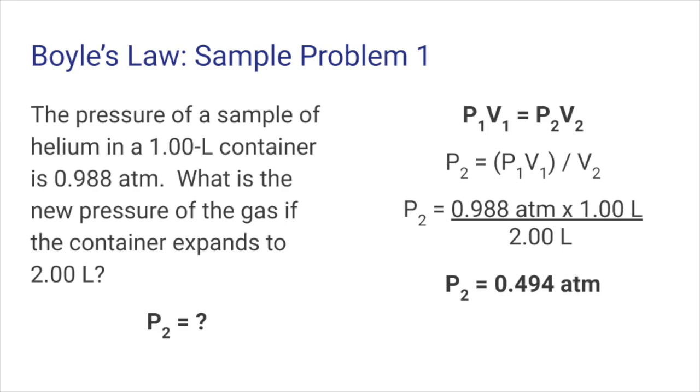Here is the solution to this problem, so let's take a look. First off, we need to recognize that the new pressure will be P2 in our Boyle's law equation. So we'll need to solve Boyle's law for P2 by dividing both sides of the equation by V2. Then we can substitute in 0.988 atm for P1, the initial pressure, 1.00L for V1, the initial volume, and 2.00L for V2, the final volume.